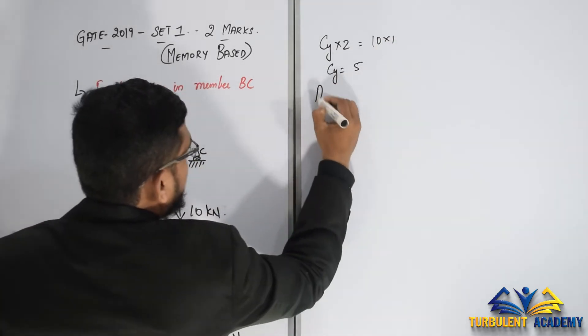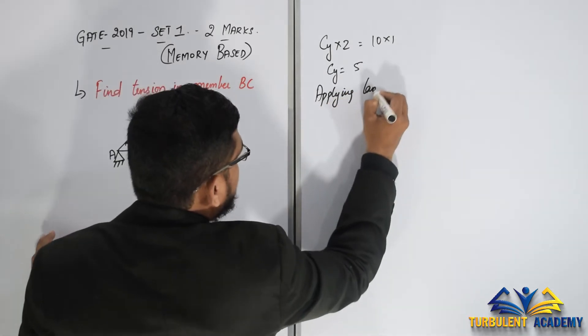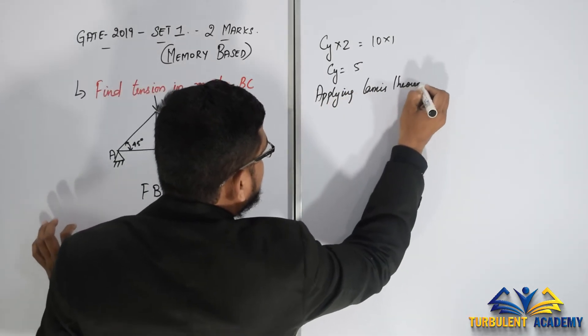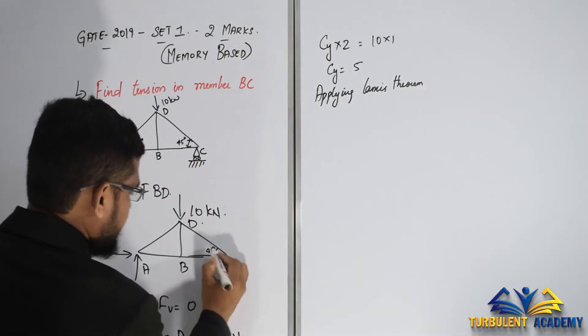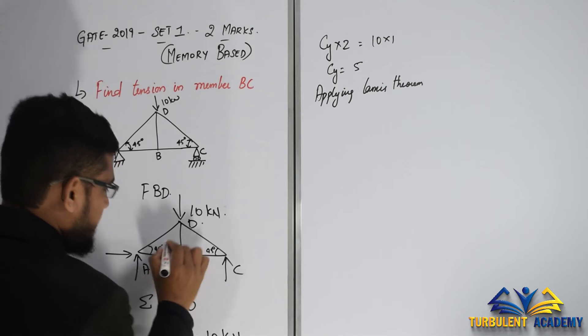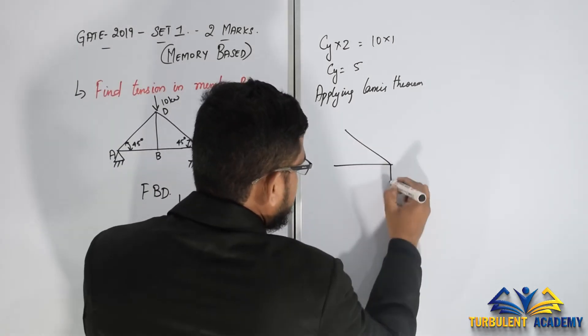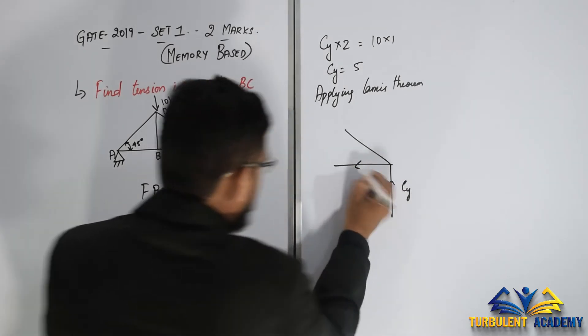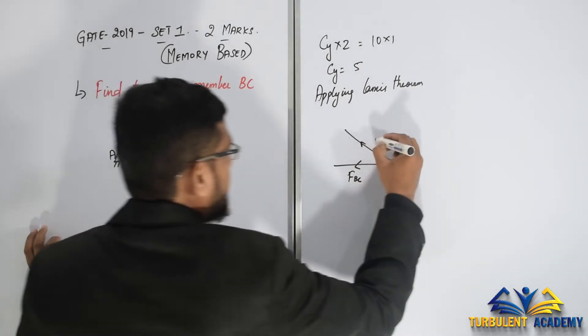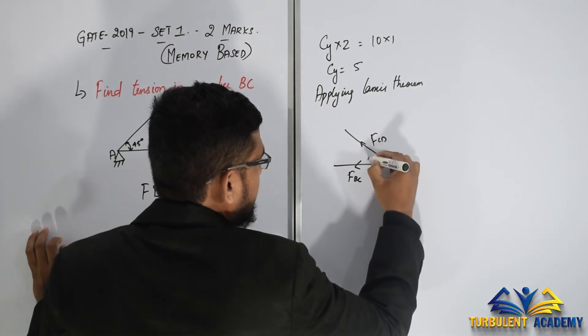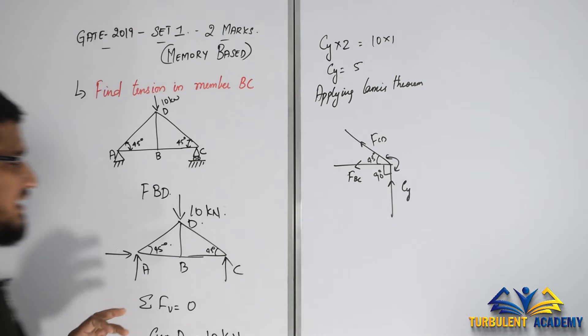Now I'm going to apply my powerful, very simple Lamy's theorem. It's going to get me the answer like anything. So we have 45 degrees over here, 45 degrees over here. Apply Lamy's theorem at point C, you are going to get the solution. So yes, this is C_Y, this is F_BC as asked in the question, this is going to be F_CD. Just write down the angles as it is: 90, 45, 225.